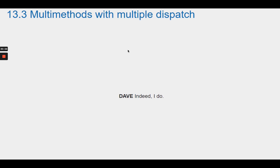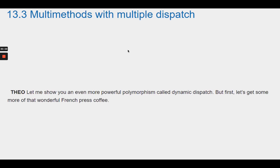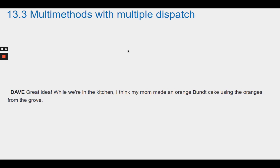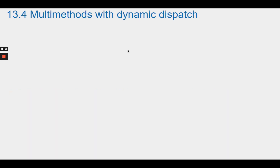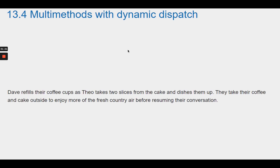Theo says he'll show Dave an even more powerful polymorphism: dynamic dispatch. But first they get more French press coffee and Dave's mom's orange bundt cake. Section 13.4: Multi-Methods with Dynamic Dispatch. Dave refills coffee cups as Theo dishes up cake slices; they take them outside to enjoy the fresh country air.